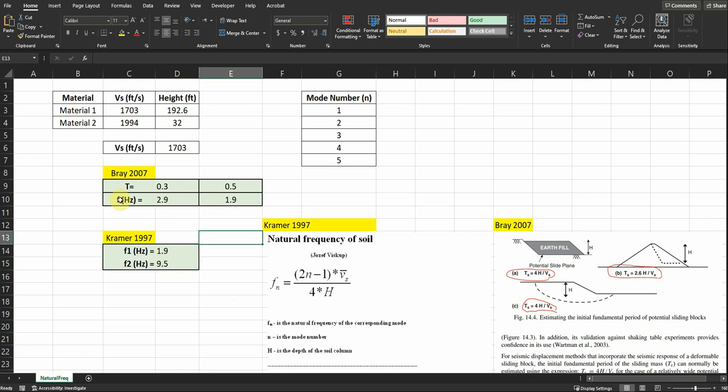We see we get different values, but using the second method, which is 4h divided by vs, we obtained similar values: 1.9 for both Bray and Kramer. That's the fundamental frequency.